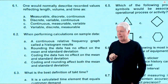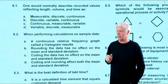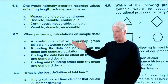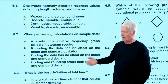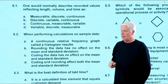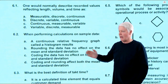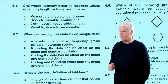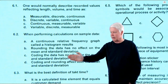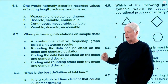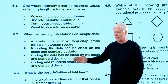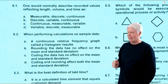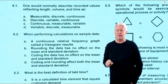Question 6.2: When performing calculations on sample data, which of the following is true? Option A — a continuous relative frequency graph results — too many holes; not necessarily graphical. Option B — rounding the data has no effect on mean and standard deviation — you can round incorrectly, so this is wrong. Option C — coding the data has no effect on mean and standard deviation — coding does have an effect. Option D — coding and rounding affect both mean and standard deviation. I'm going to the whiteboard to verify.